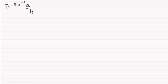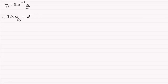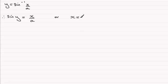To differentiate this there are two methods we can use, and both require us to take the sine of both sides. So if we do that we get sine of y equals x divided by a. One way is to times both sides by a and make x the subject, so x equals a times the sine of y.